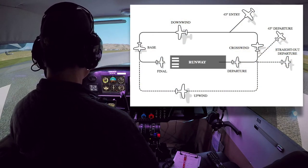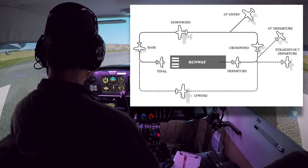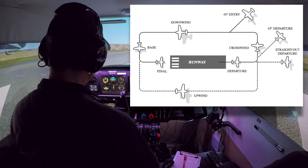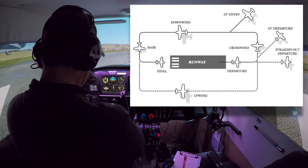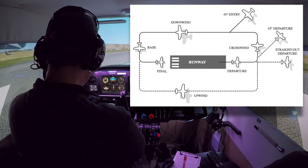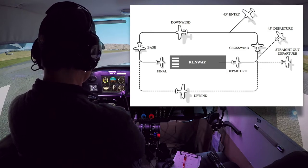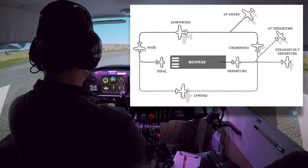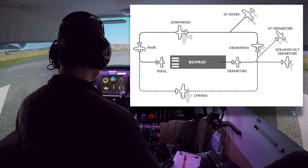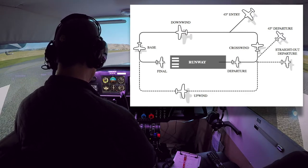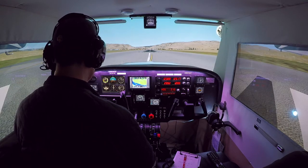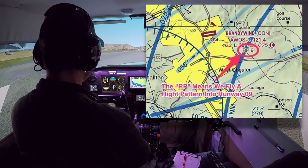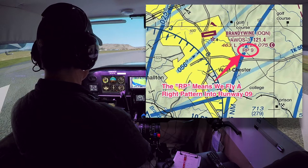A pattern basically has four legs to it: upwind, crosswind, downwind, and base. And if you're on final, then final is an additional way of talking about the last leg. Most patterns are flown left traffic, meaning you're making left-hand turns from the runway and around the airport. If it's a right-hand pattern, it will say so on the chart with the letter R next to the information on the runway, which will tell you that RP is right pattern.